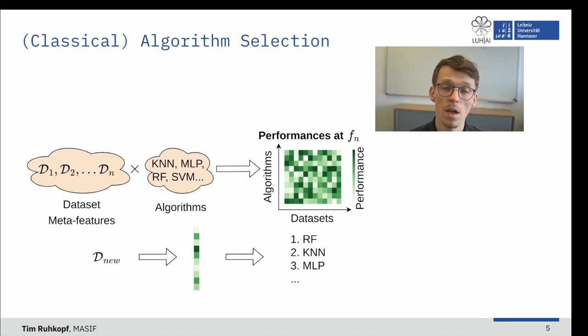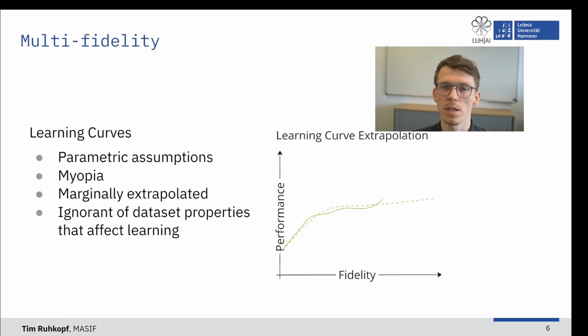This requires considerable engineering effort in developing the right meta features and offers no guarantees for a new dataset. And we have left a lot of intermediate performance data that is usually tracked anyways on the table, which leads us to an alternative approach. Namely, multi-fidelity. In essence, it seeks to utilize low-cost approximations to cheaply determine the final outcome.